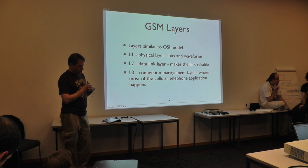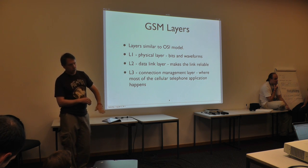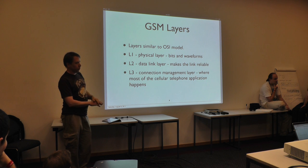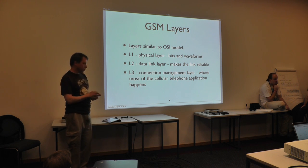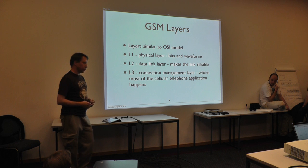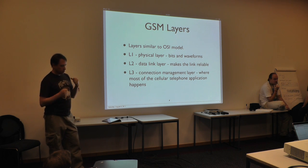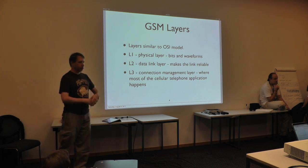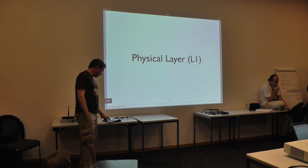We're going to talk about the structure of GSM, particularly in the context of OpenBTS, starting at layer 1 — the lowest part of the physical layer — and working all the way up. In layers 1 and 2, OpenBTS is just like any other GSM system, but layer 3 departs from conventional GSM architecture. The layers are similar to those in the OSI model, though GSM development predated OSI standardization. Layer 1 is all about bits and waveforms. Layer 2 is the data link layer that makes layer 1 look reliable. Layer 3 is the connection management layer where telephone calls and text messages actually happen.